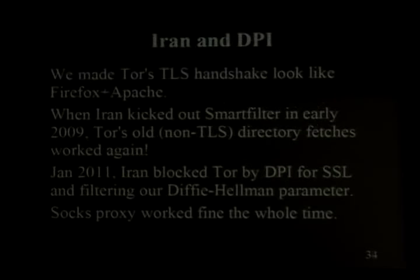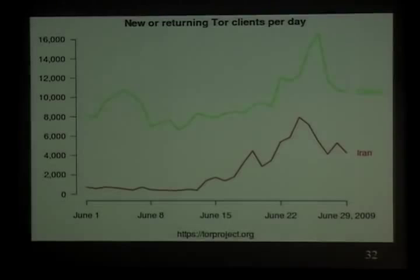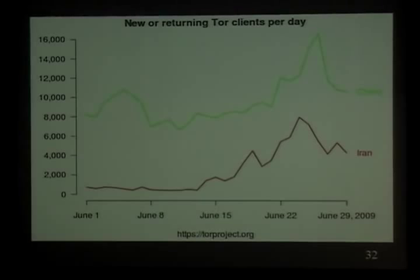That was the good news — TOR worked in Iran in 2009. But in January of this year, Iran had caught up in terms of technology and figured out how to block things like TOR. They bought some very fancy boxes from Nokia that do deep packet inspection and could recognize SSL flows — essentially a knob to turn down bandwidth allocated to SSL flows. In January they figured out how to actually recognize TOR flows on the wire.